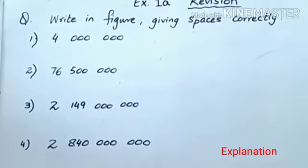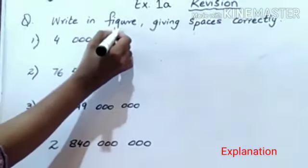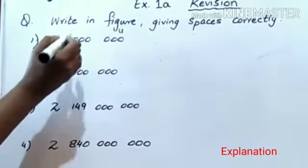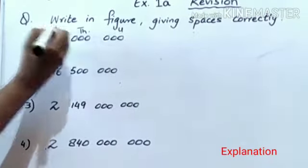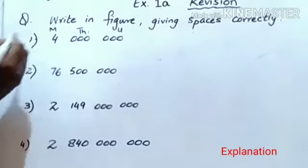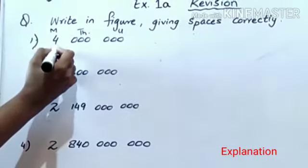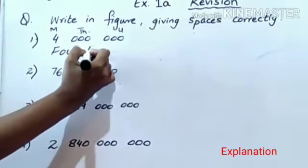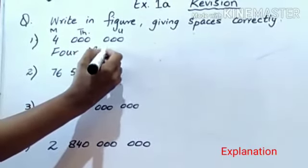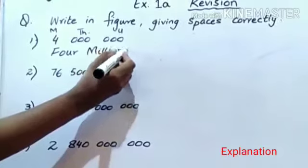Write the head of the family: units, thousands, million. So 4 is million. I will write 4 million.